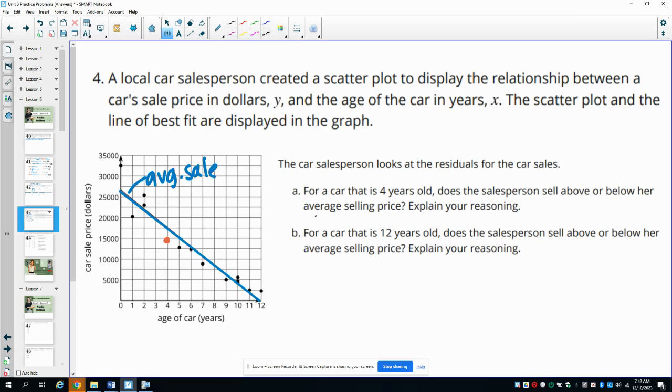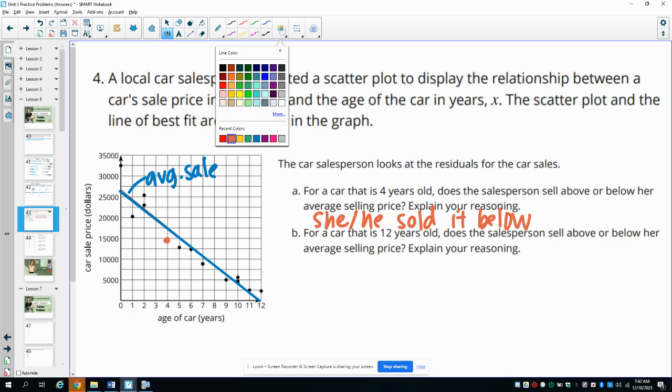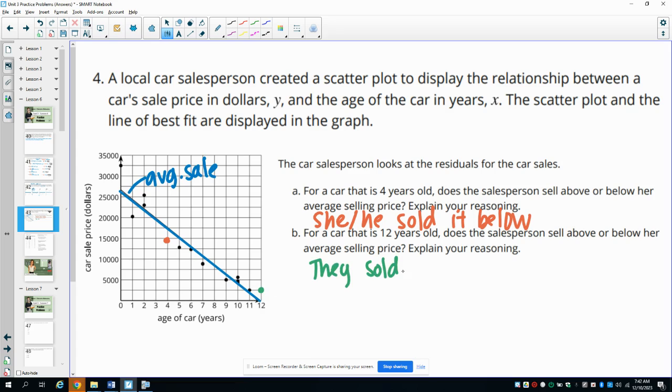So she sold it below. For a car that's 12 years old, did the salesperson sell it for above or below asking? So here's 12, here's the data point. The data point is above, so they sold it above the average sale price.